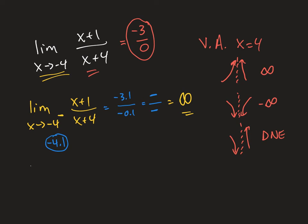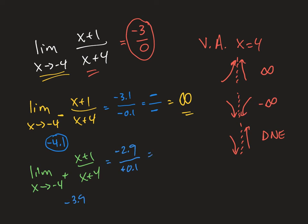For the right-hand limit in green, we approach negative 4 from the right by plugging in negative 3.9. In the numerator we get about negative 2.9 — still negative. But in the denominator, negative 3.9 plus 4 gives positive 0.1, which is positive. So the numerator is negative and the denominator is positive, which implies this limit is negative infinity.